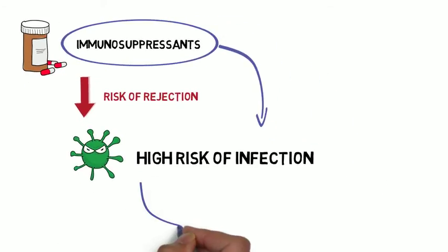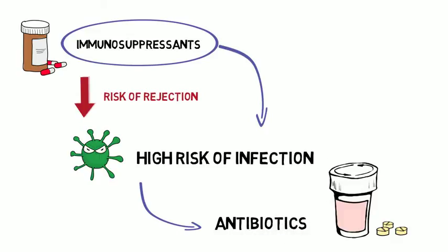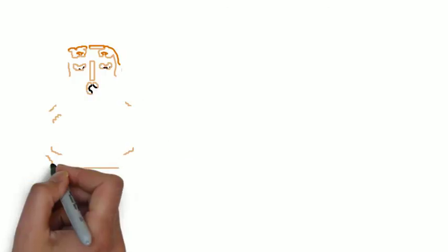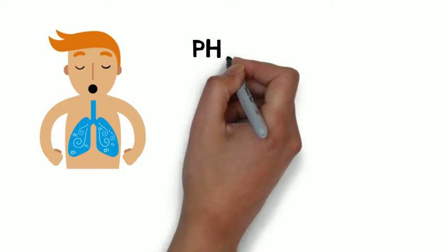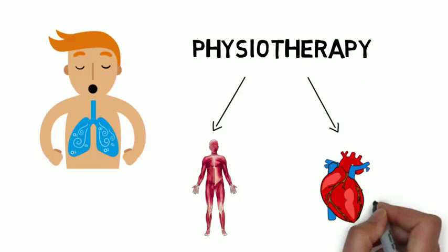Therefore, patients are also given broad-spectrum antibiotics to reduce the risk of infection. Once patients are capable of breathing on their own, they must begin physiotherapy to strengthen both their musculoskeletal and cardiovascular systems.